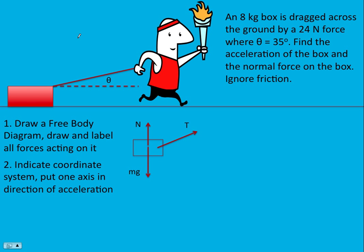Step two is to indicate a coordinate system. Almost always we put one axis in the direction of the acceleration, at least if we know it. I'm going to say up is positive y, to the right is positive x. And then I'm going to add where theta is on my free body diagram, so that can be helpful.